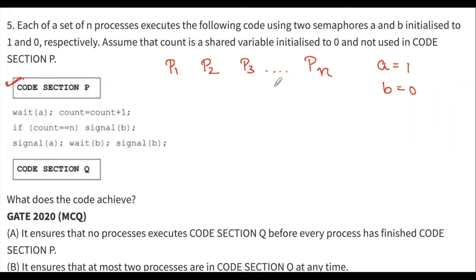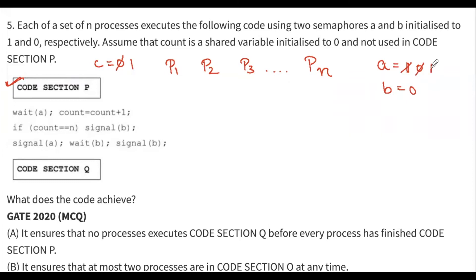Let's check whether any process can execute code section Q before all processes execute code section P. Assume process P1 executes: wait(A) makes A zero, then count (initialized to zero) becomes one. If count equals N — no, count is not equal to N — so that signal statement will not get executed.